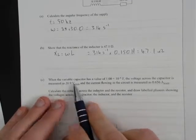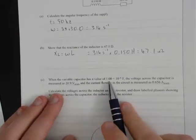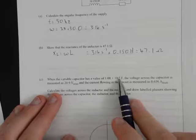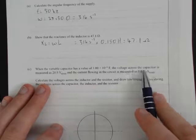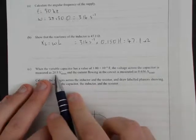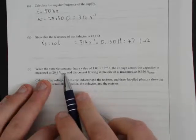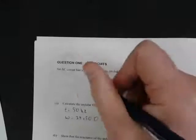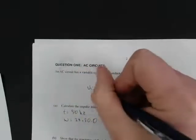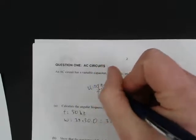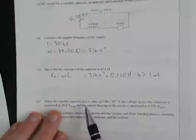Next question: When the variable capacitor has a value of 1×10⁻⁶ farads (1 microfarad), the voltage across the capacitor is measured at 20.9 volts RMS. So VC equals 20.9 volts RMS.